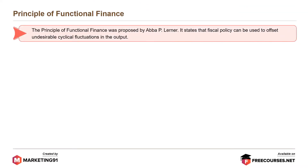The principle of functional finance was proposed by Abba P. Lerner. It states that fiscal policy can be used to offset undesirable cyclical fluctuations in the output.